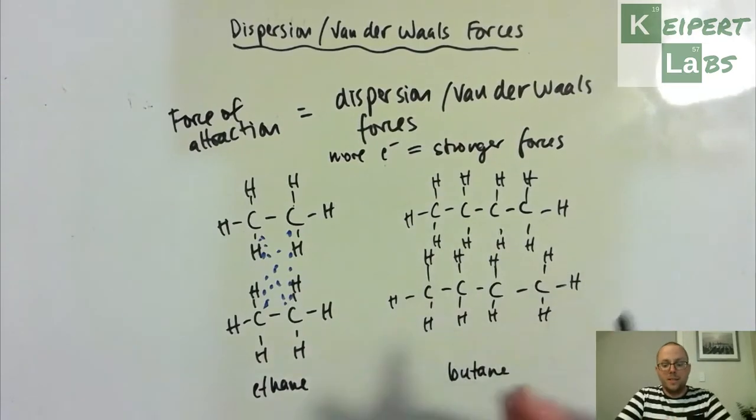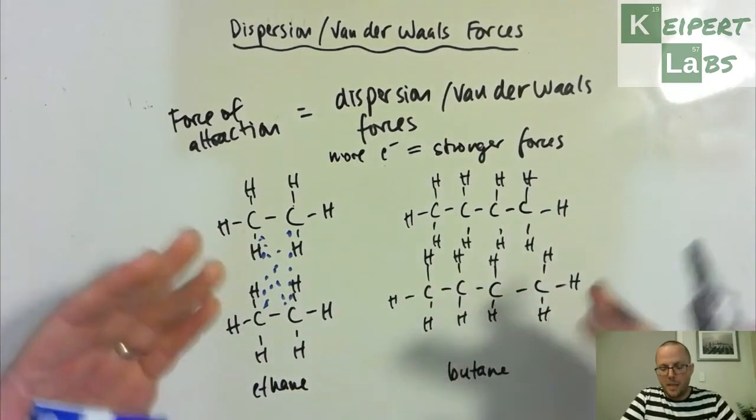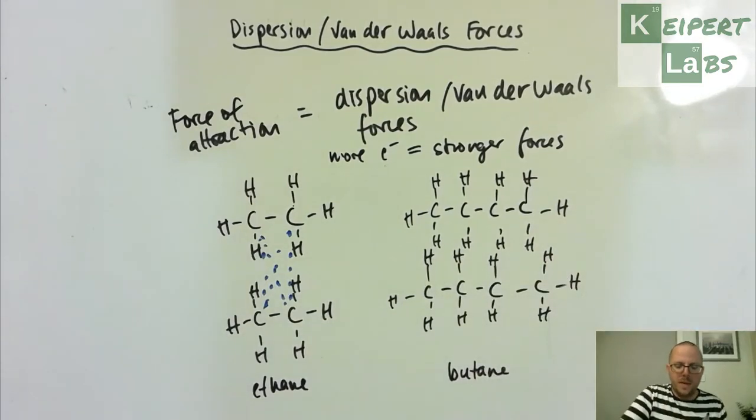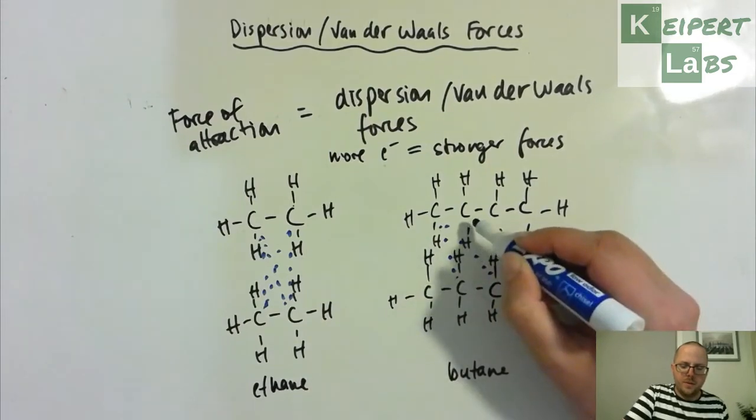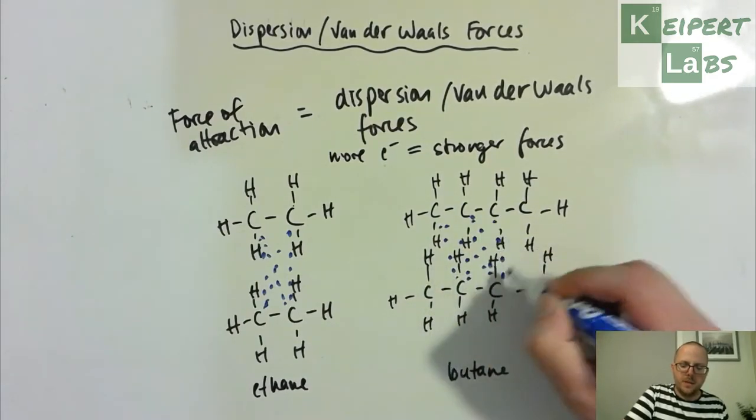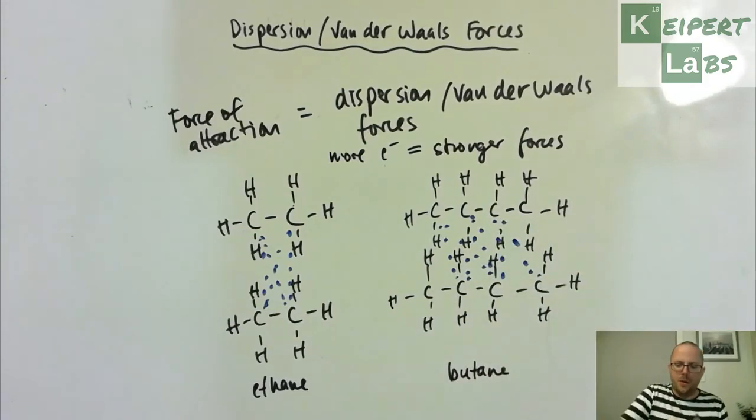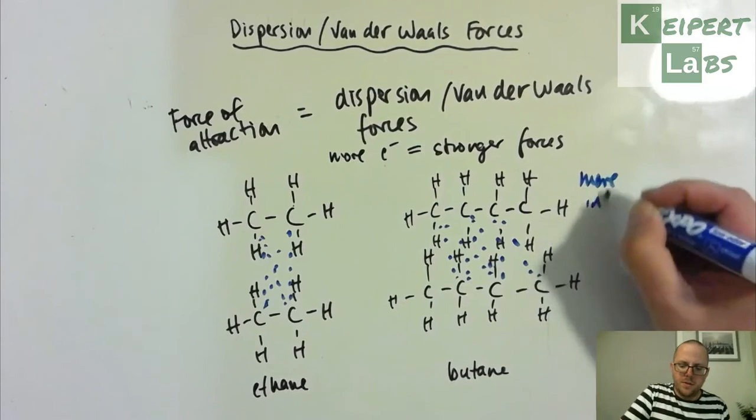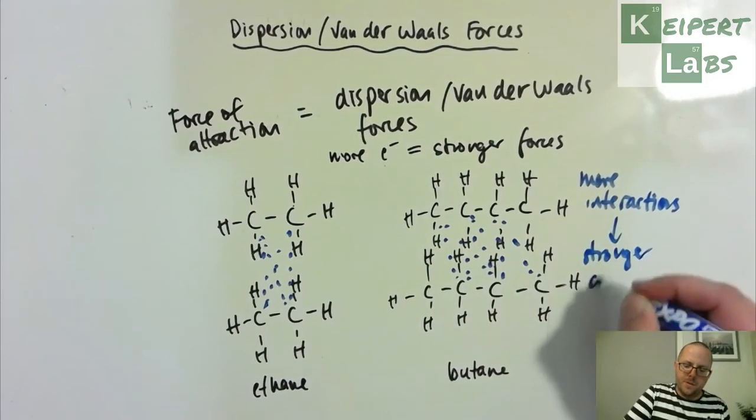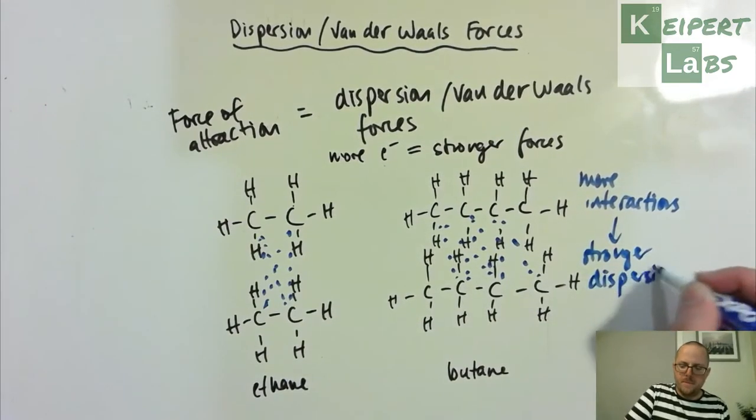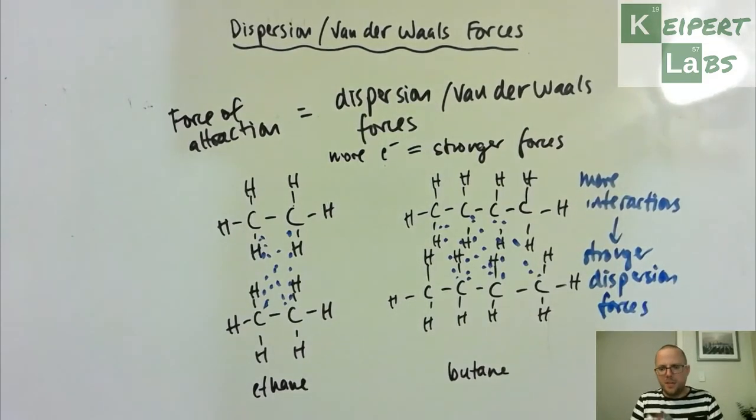These molecules are pretty much twice the length of those of ethane, give or take, because we have more atoms. All of a sudden I've got lots of different possible interactions that might exist between those molecules. We've got more interactions, therefore stronger dispersion forces.